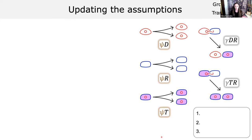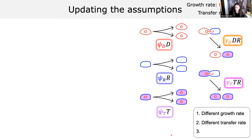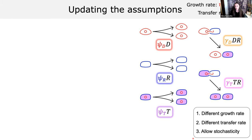Our method updates some of these assumptions. We know that things grow at different rates, especially different species — Klebsiella grows quite a bit faster than E. coli for me. So we update the growth rate parameters to allow population-specific growth rates. We do the same with conjugation rates, because within-species conjugation rates can be quite different from cross-species rates. And this is the key diversion: we use a stochastic branching process framework to derive our metric rather than a deterministic approach.